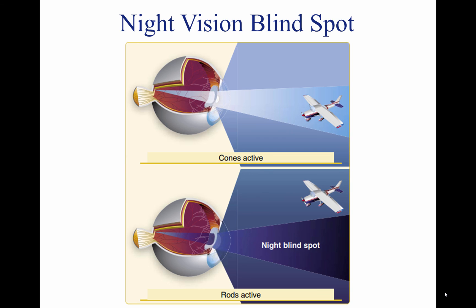Several things can be done to keep the eyes adapted to darkness. Avoid bright lights before and during flight. For 30 minutes before a night flight, avoid any bright light sources such as headlights, landing lights, strobe lights, or flashlights. If a bright light is encountered, close one eye to keep it light-sensitive, allowing use of that eye when the light is gone. Red flight deck lighting also helps preserve night vision, but red light severely distorts some colors and completely washes out the color red, making reading an aeronautical chart difficult. A dim white light or a carefully directed flashlight can enhance night reading ability. While flying at night, keep the instrument panel and interior lights turned up no higher than necessary to see outside references more easily.